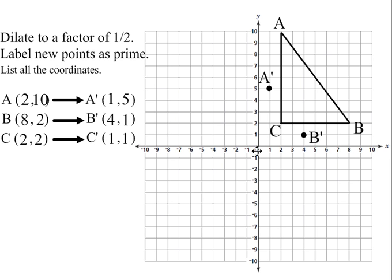C' is 1, 1, so that would be right here, 1 to the right and 1 up. And that would be C'. So you label that.